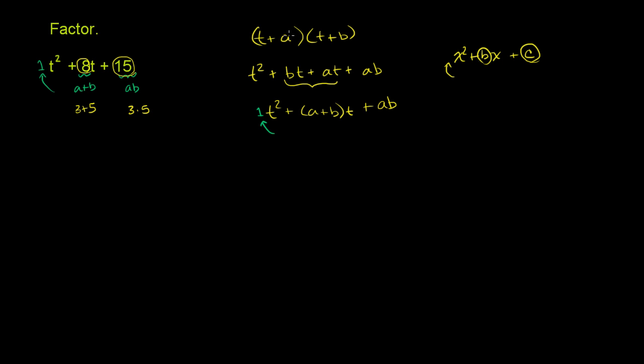Now we could just go straight and factor this and say, hey, this is t plus 3 times t plus 5, since we already figured out what a and b are. But what I want to do is kind of factor this by grouping. So I'm essentially going to go in reverse steps from what I just showed you.